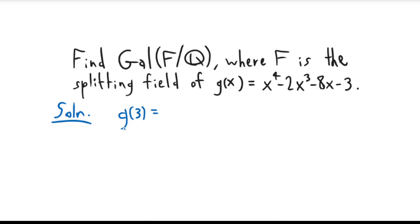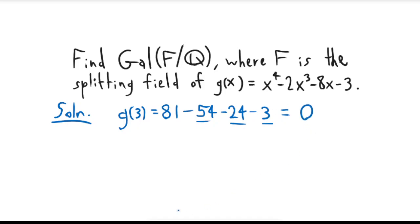Why is that? Well, g(3) is equal to 81 minus 54 minus 24 minus 3. We get 54 and 24, so that's 78, giving us 81 minus 78 minus 3, which equals 0. So 3 is in fact a root of this polynomial, and we can factor it by pulling out a linear factor of (x − 3).